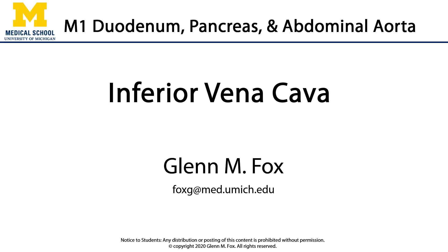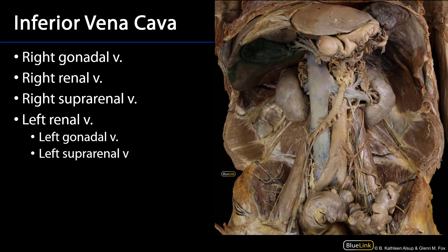Hi, let's talk about the inferior vena cava and its tributaries. Here we're looking at the retroperitoneum, and we can see this inferior vena cava which is retroperitoneal and found right lateral to the abdominal aorta. The inferior vena cava is formed by the coalescence of the common iliac veins coming together to form this spectacular vessel.